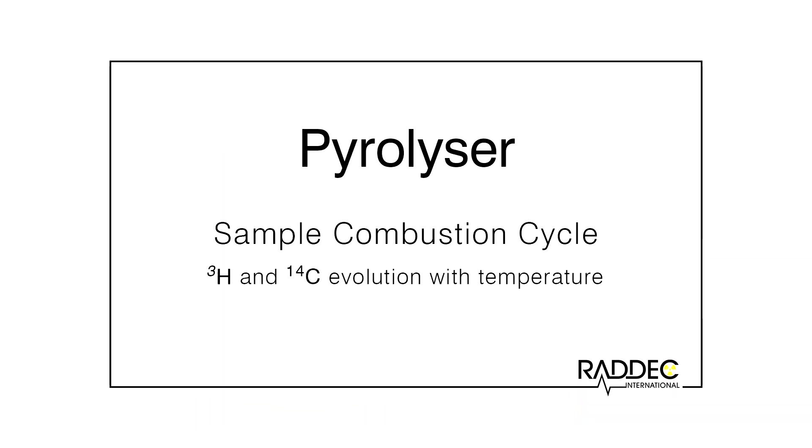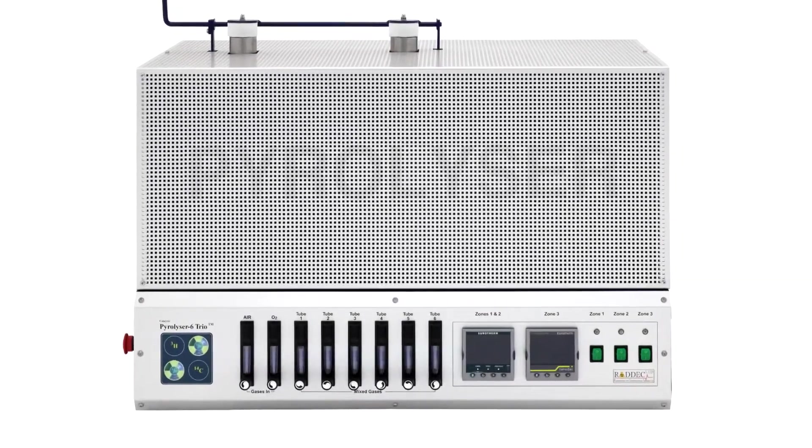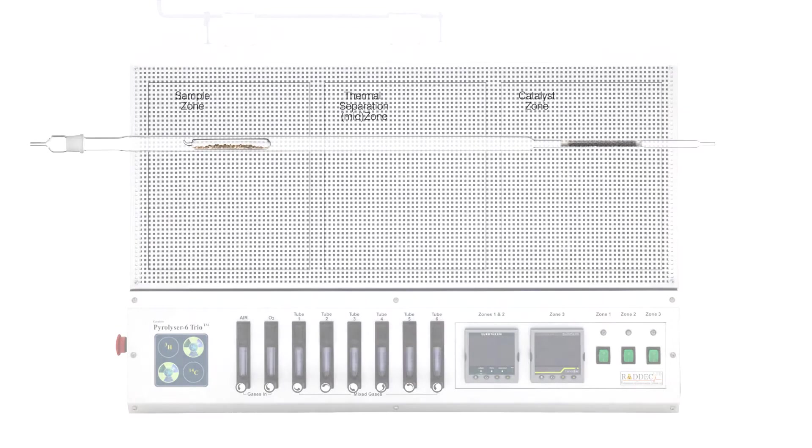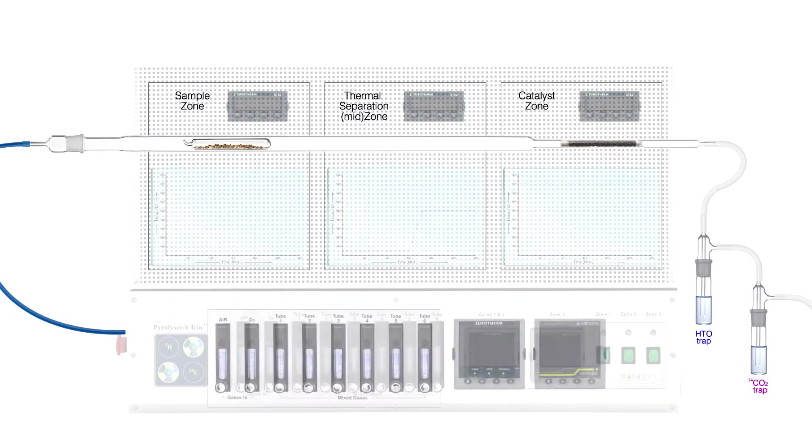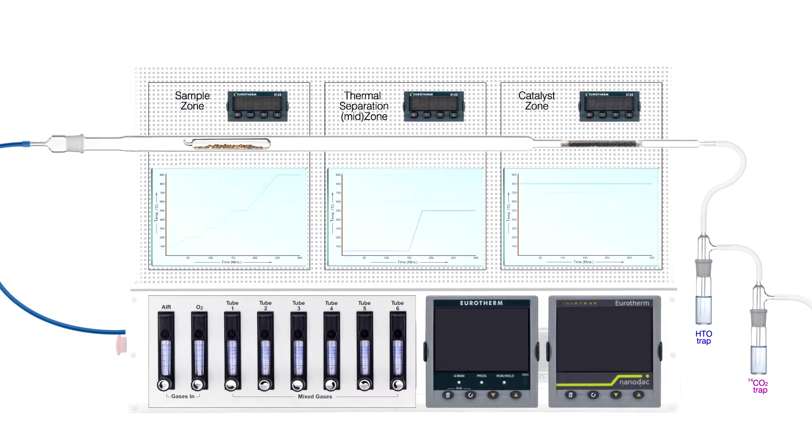Let's look at a typical sample combustion cycle. During setup, the analyst inserts a sample boat into each combustion tube and positions it in the sample zone of the furnace. It is then a simple matter to make connections to the independently controllable carrier gas lines at one end and the bubbler traps at the other end.